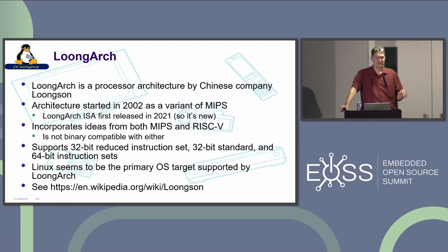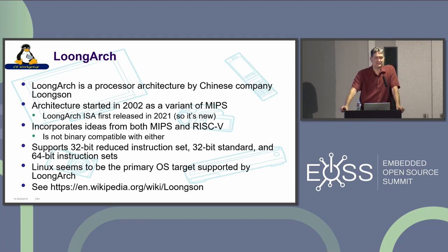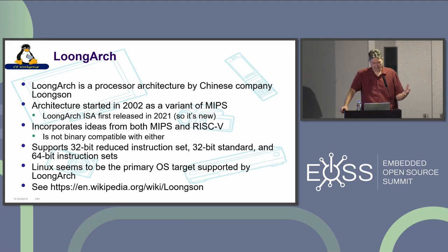LoongArch — I don't think very many people are using this in embedded, but it's a processor architecture designed by a Chinese company called Loongson. The architecture was started in 2002, it's a variant of MIPS, but recently went through an overhaul and incorporates ideas from both MIPS and RISC-V — it's not binary compatible with either. It supports 32-bit reduced instruction set, 32-bit standard size, and 64-bit instruction sets. The interesting thing is it seems to be a processor architecture designed with Linux in mind as its primary host OS.